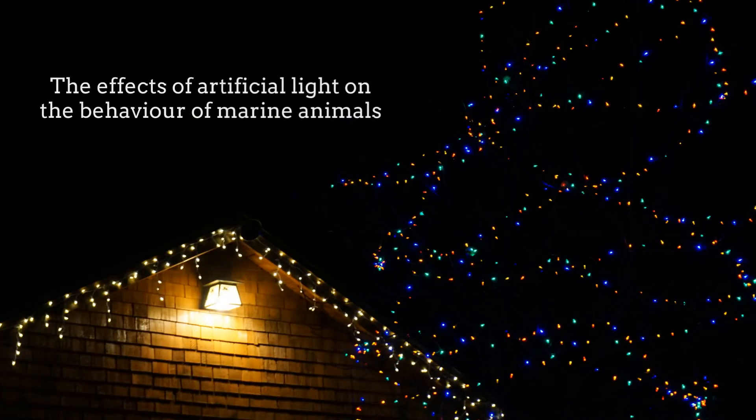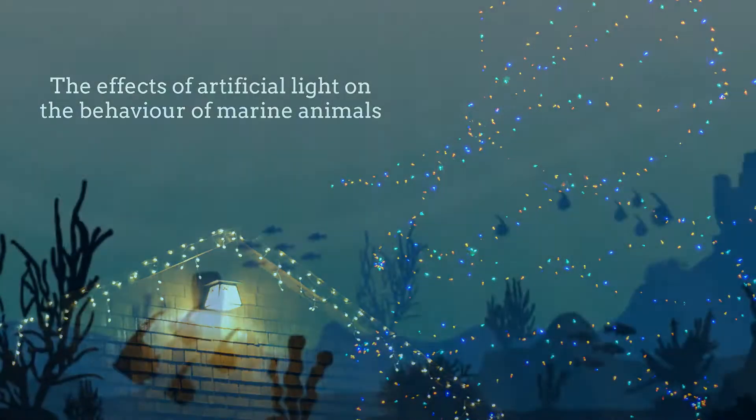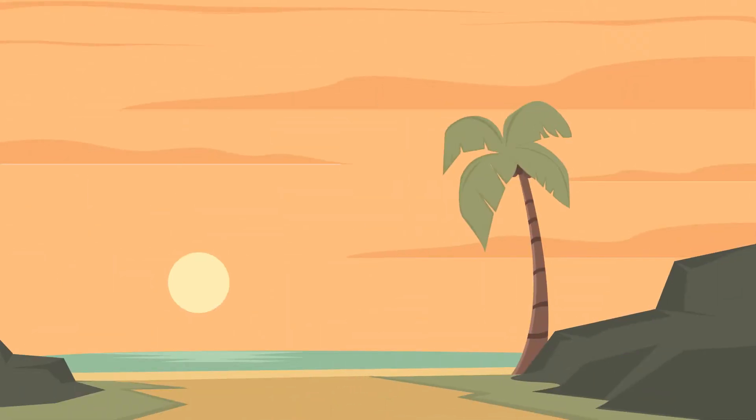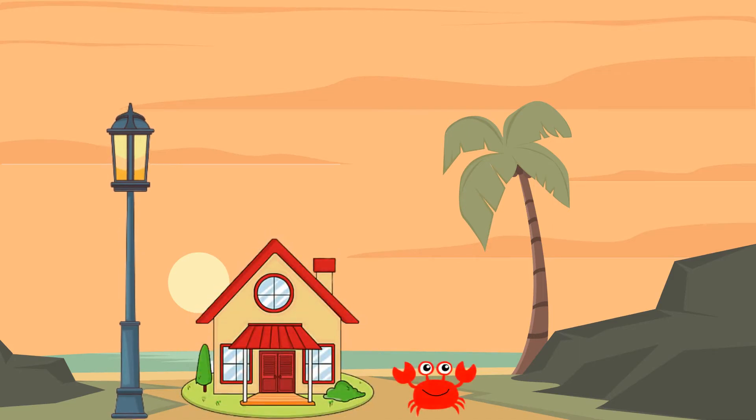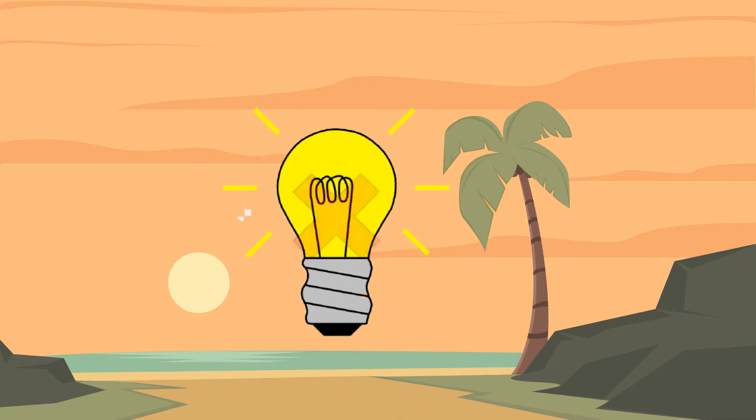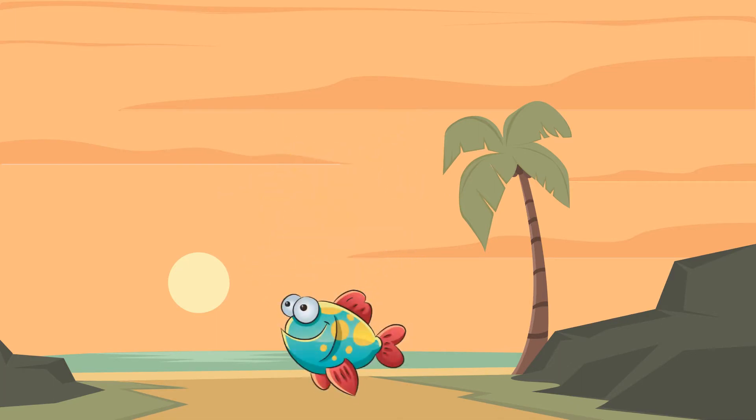My research is looking at the effects of artificial light, or light produced by humans, on the behavior of marine animals that live on our beaches and in our oceans. I am trying to find out if beach lights and lights coming from cities and houses are bad for marine animals, and if they are, I want to create ways to reduce these effects to ensure these animals can live healthy and happy lives.